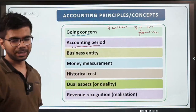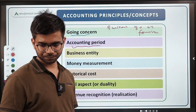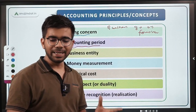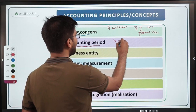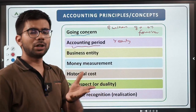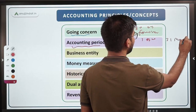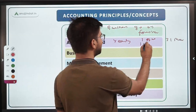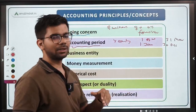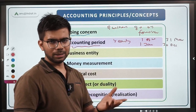The accounting period concept is closely related to going concern. Because of the going concern assumption, we divide our accounting period into yearly intervals. Generally the accounting period is from 1st April to 31st March (the financial year), but it can also be the calendar year from 1st January to 31st December. Dividing business life into yearly intervals makes it easier to analyze growth in revenues, profits, and other metrics.